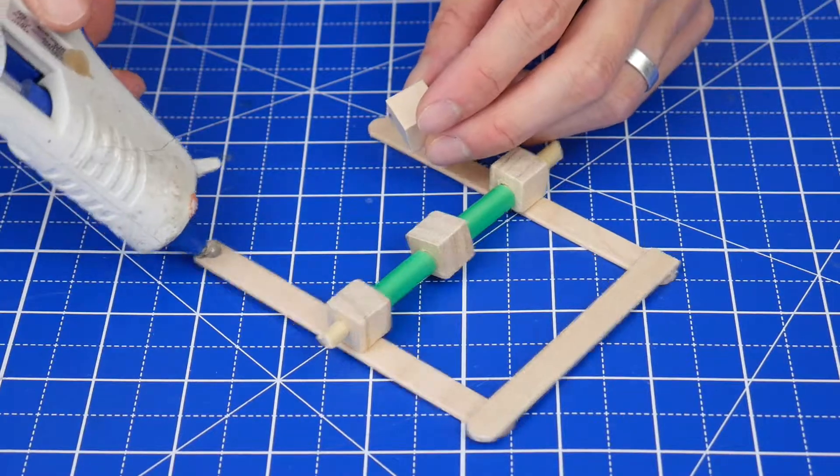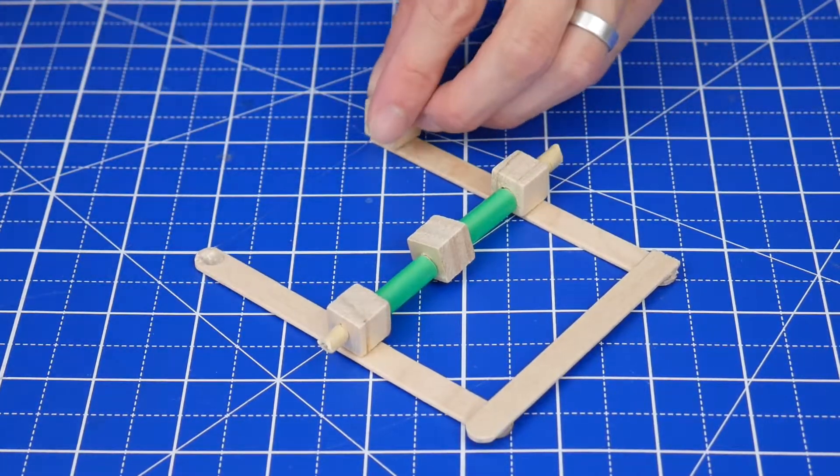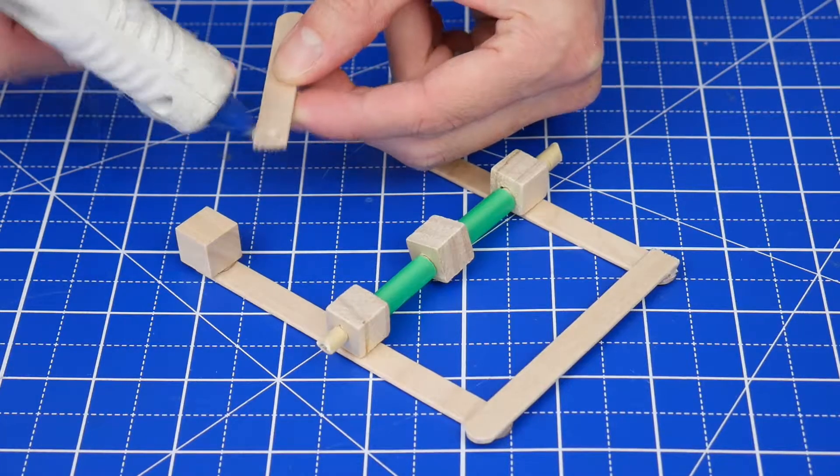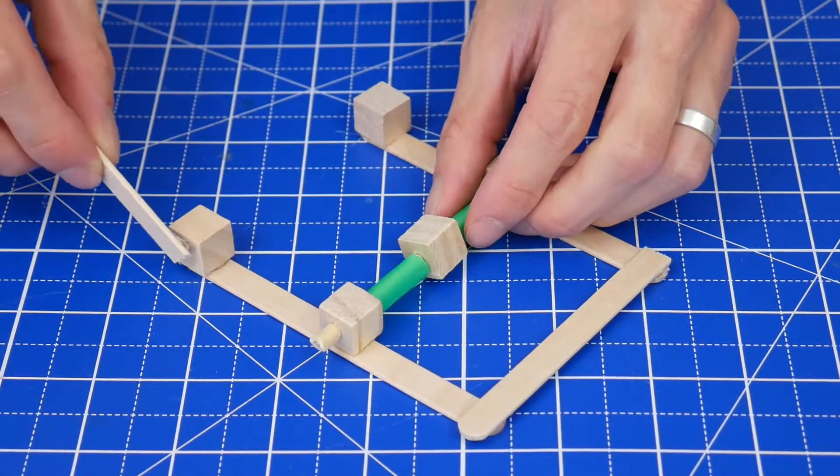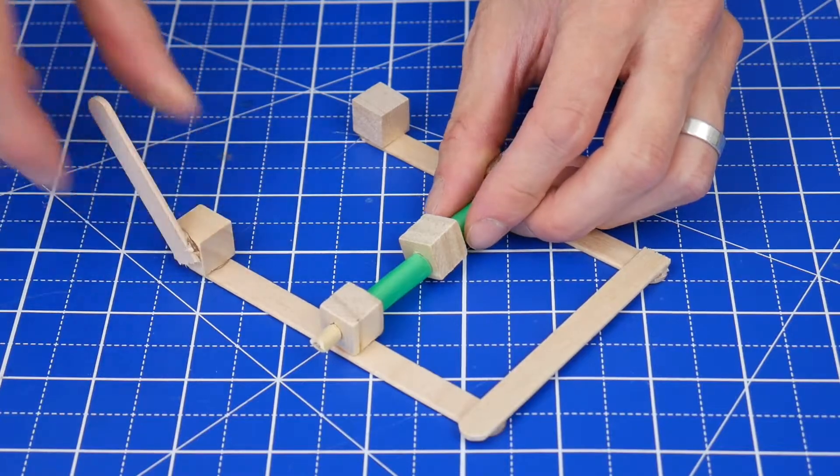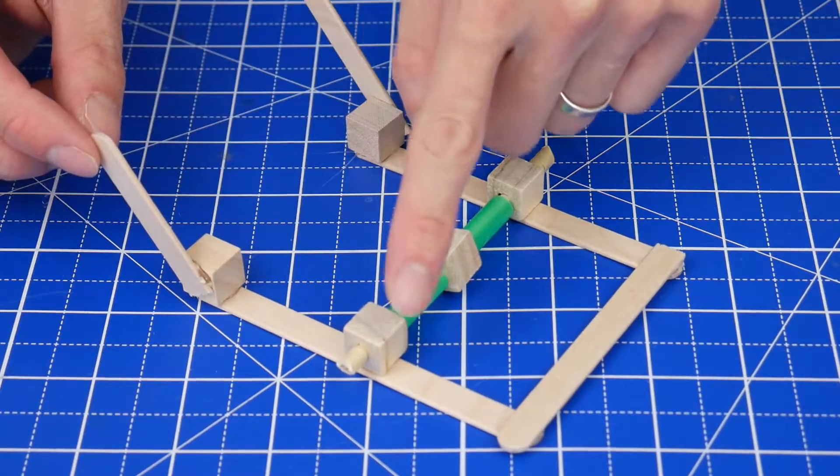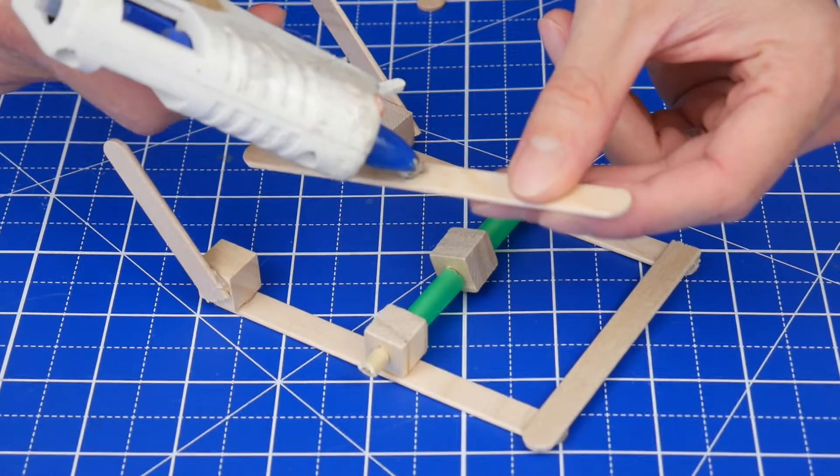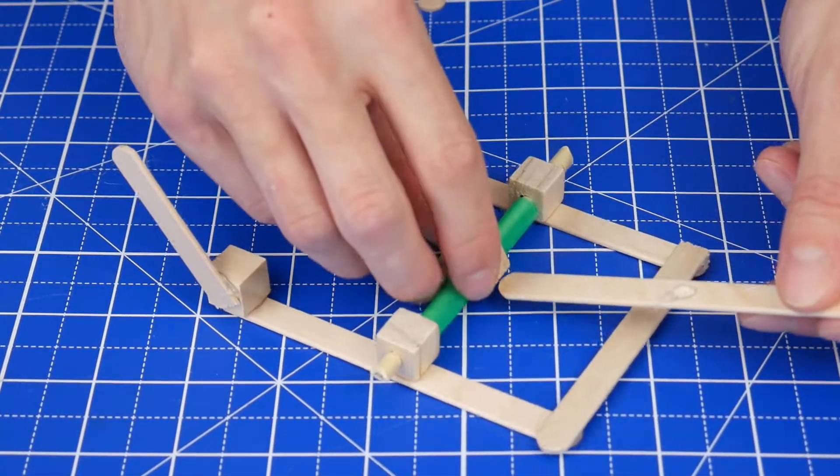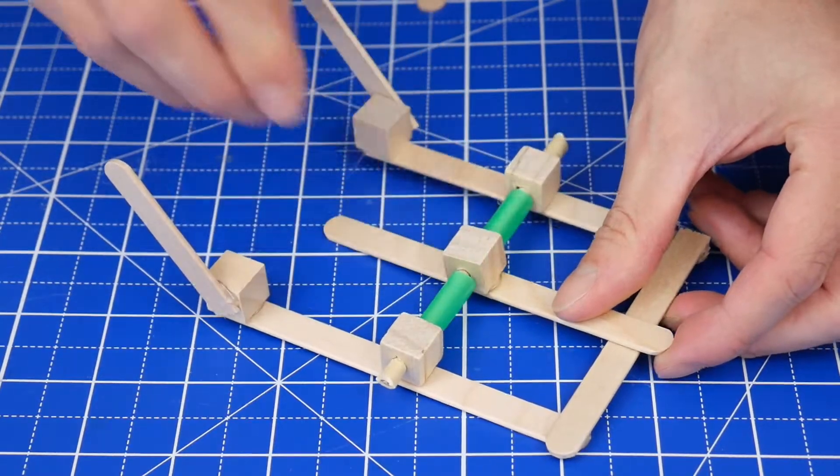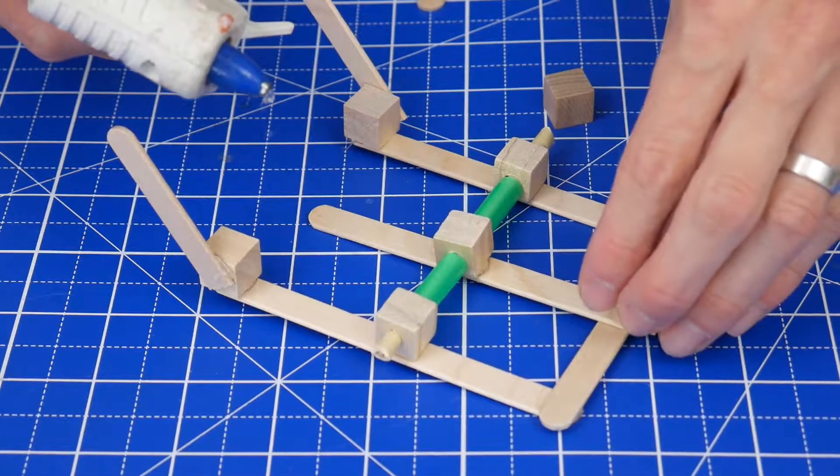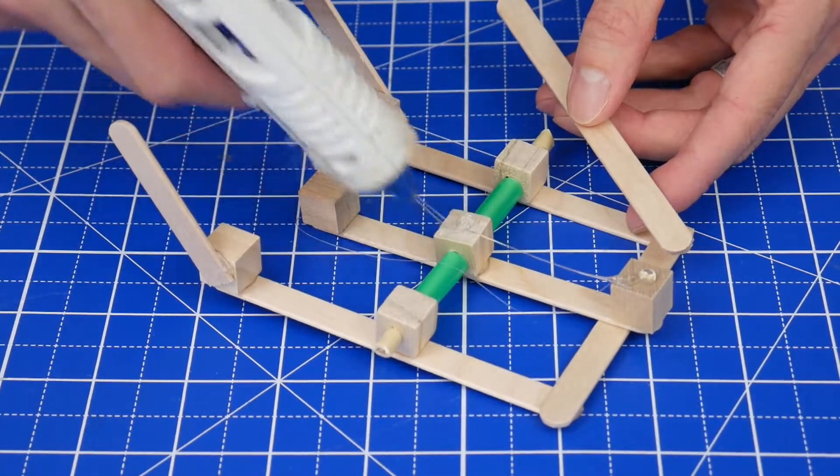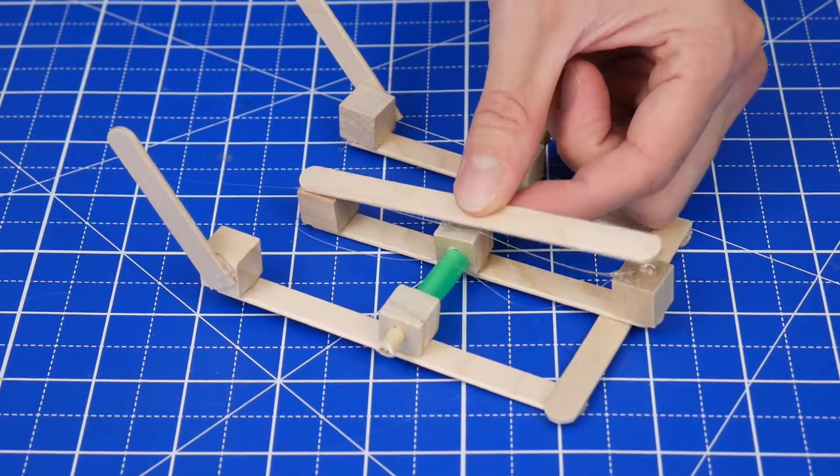Next, create two of the fingers by first gluing a cube here and here. Then glue craft sticks that have been cut or snapped in half diagonally onto the sides of those cubes. Make sure these are pointing away from the hinge. Create the third finger by gluing the center of a craft stick to this cube in the middle. Then glue another craft cube onto each end of that stick and glue one more stick on top of all three of those cubes.